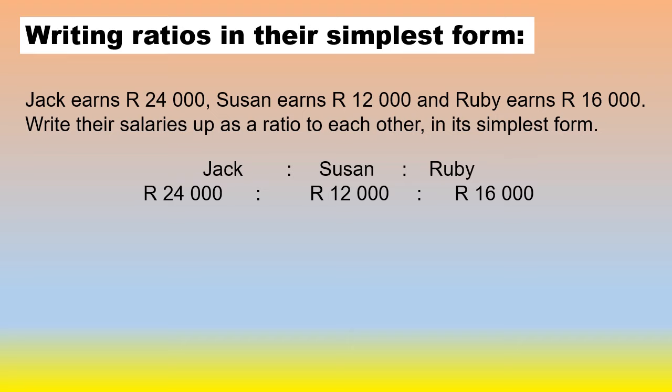You can eliminate three zeros from each number to make it drastically smaller, giving you 24 to 12 to 16. Each of those numbers are even numbers, so I can divide them by 2, which gives me 12 to 6 to 8. And again, divide by 2, and that leaves me with 6 to 3 to 4. That is its simplest form.